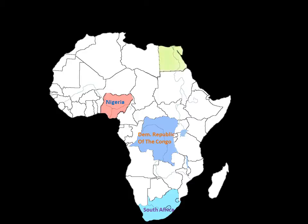After that, we have Egypt. The Nile River starts in Egypt, and if you follow the Nile River down, you'll get to Sudan. And of course, south of Sudan is, well, South Sudan. Next, we have Kenya, a little bit southeast of South Sudan.